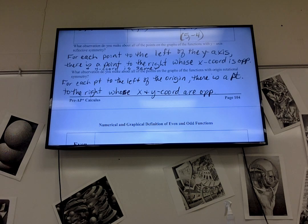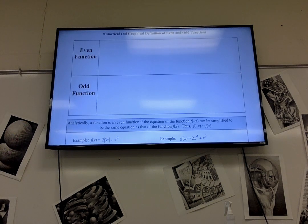So, for the last one, when the x's were opposites, the y's were the same. This one, when the x's are opposites, the y's are also opposites. So, that's, you know, the difference between even and odd.